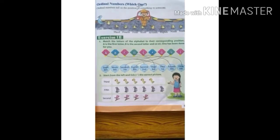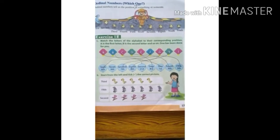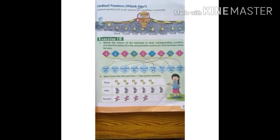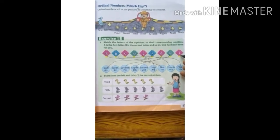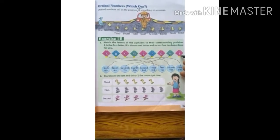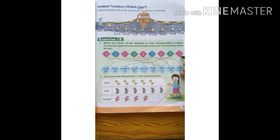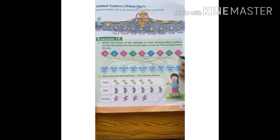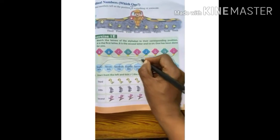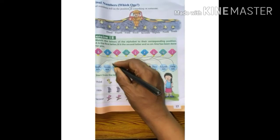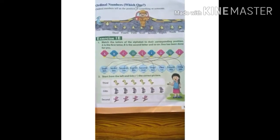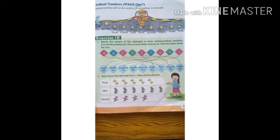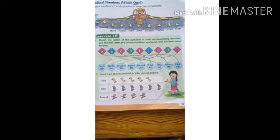Now the last letter, I. Which position is this? This is the 9th position. So we will draw a line from letter I to mark the 9th position. Done. I hope you all have done this, children.